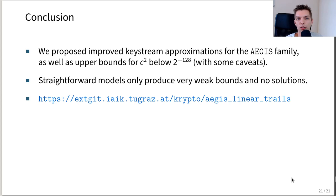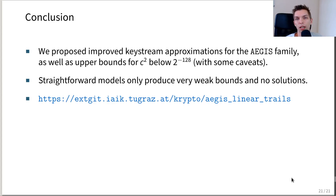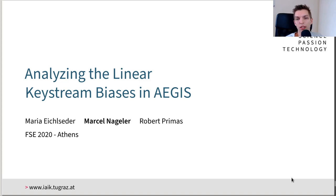To conclude, we showed improved keystream approximations for all members of the Aegis family, and upper bounds on the squared correlation contribution below 2^{128} for all three variants. We note that straightforward models only produce very weak bounds and do not provide any solutions. If you are interested, I invite you to read the paper and take a look at our code, which is hosted on our git repository. If you have any questions, I invite you to ask them during the live sessions. Thank you.